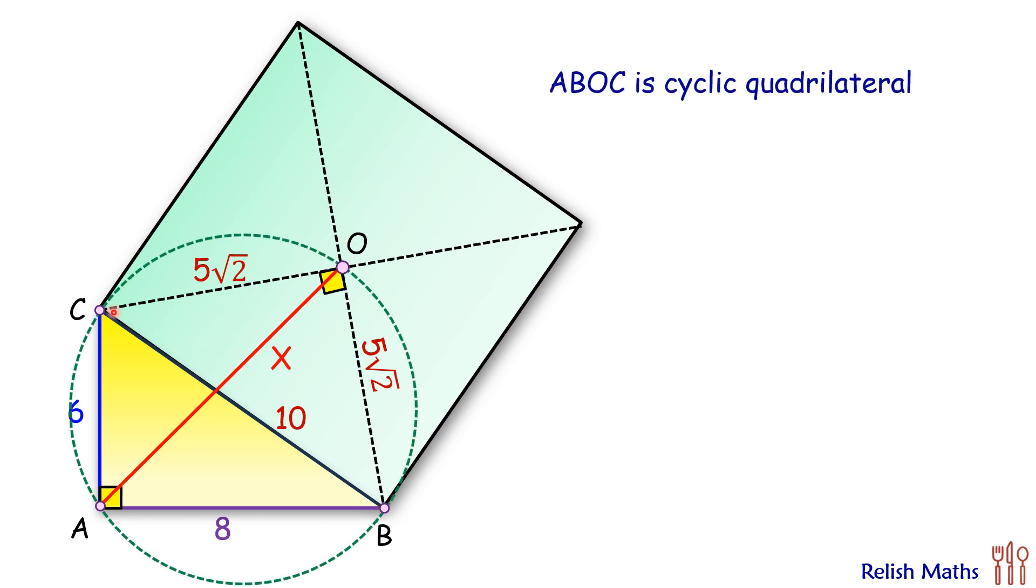So in a cyclic quadrilateral, applying Ptolemy's theorem, which says that the sum of the product of opposite sides, that is AB times OC plus AC times OB, equals the product of the diagonals. So the product of the diagonals is BC times AO.